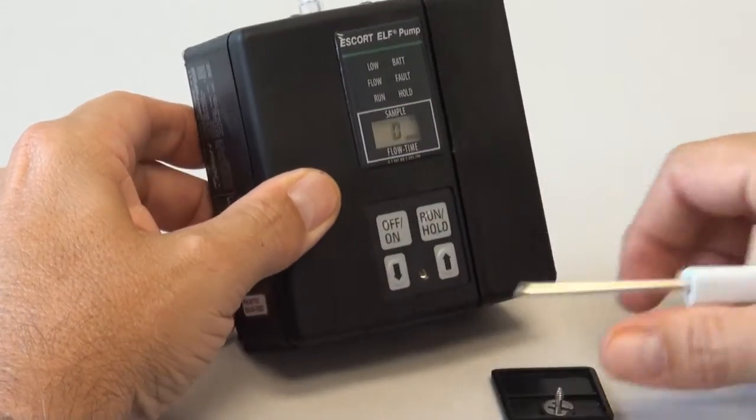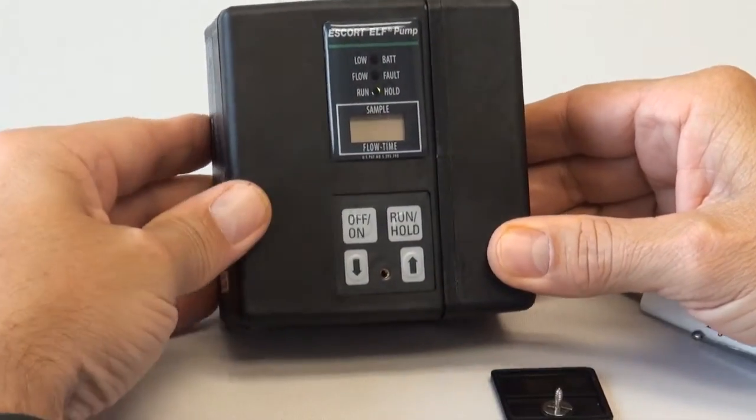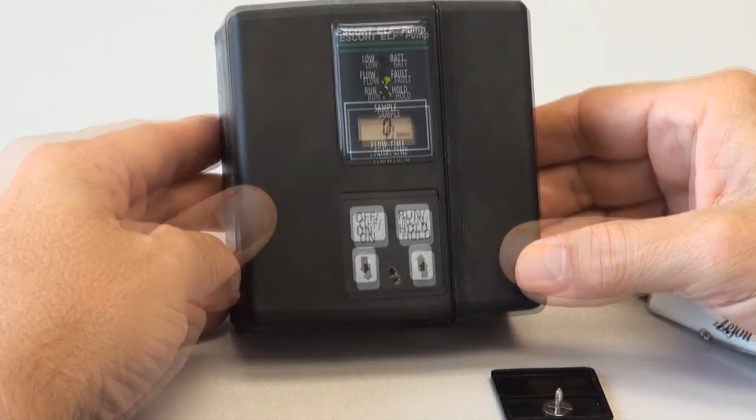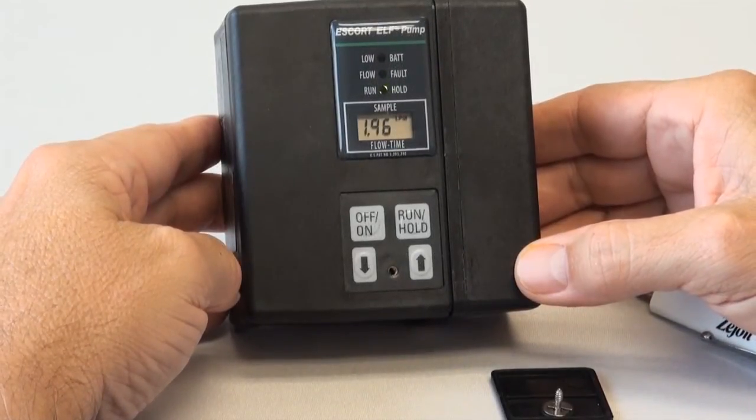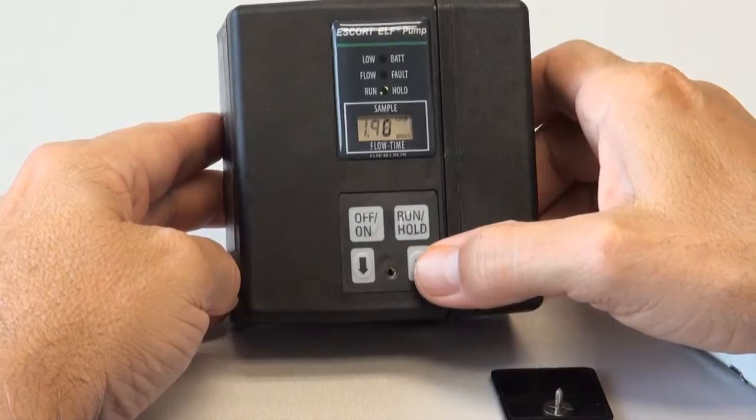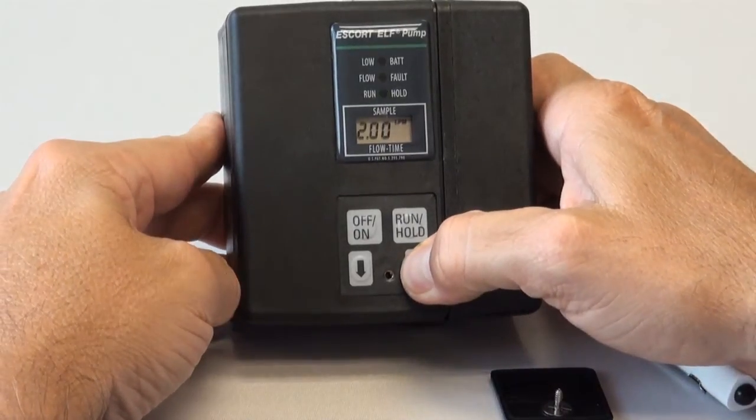First, turn the pump on and let it reach its flow rate setting. If the pump is not set for 2.5 liters per minute, use the flow rate control buttons to set the pump at 2.5 liters per minute.